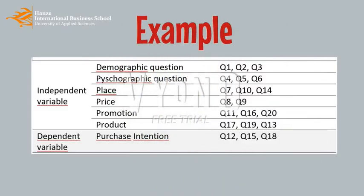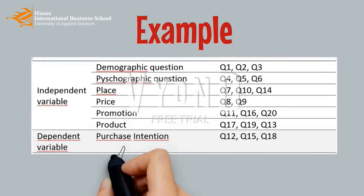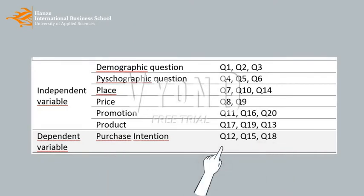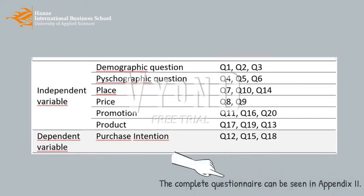This is an example of a breakout table of the instrument. This column shows all the concepts, and this column shows which questions in the questionnaire will be used to measure this concept. The complete questionnaire can be seen in the appendix.